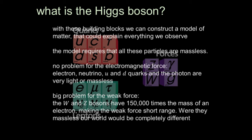On the other hand, this is a big problem for things associated with the weak force. The weak force explains, for example, why the sun works. The W and Z bosons associated with the weak force are roughly 150,000 times the mass of an electron — it's very hard to say that's zero. So the simple model with everything massless is just not going to work.